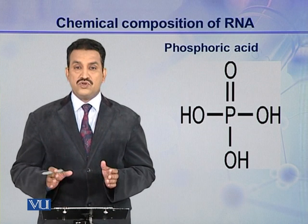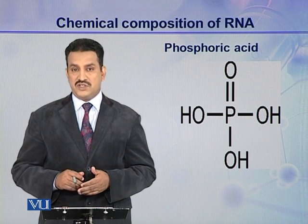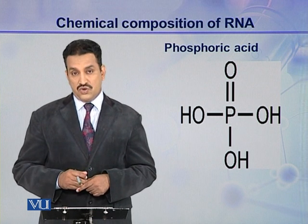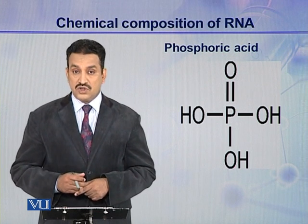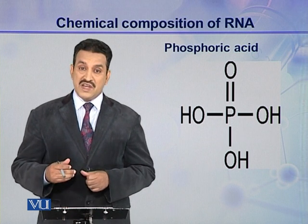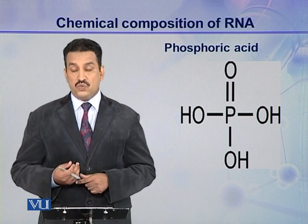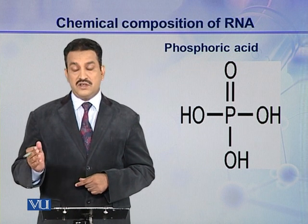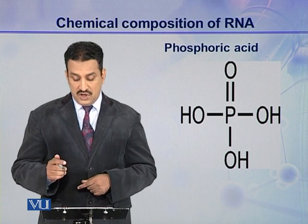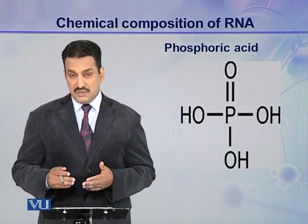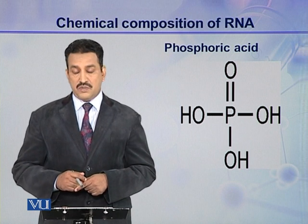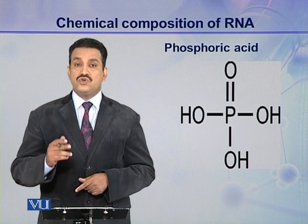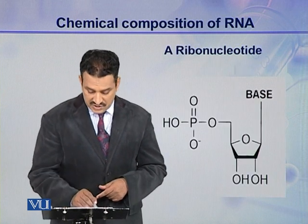The third component of a ribonucleotide is phosphoric acid. Phosphoric acid has three hydroxyl groups, and these hydroxyl groups have the ability to make ester linkages with the hydroxyl groups present on the pentose sugar — either ribose or deoxyribose. Ideally it can make three ester linkages, but normally in a polynucleotide chain, this phosphoric acid makes two ester linkages.